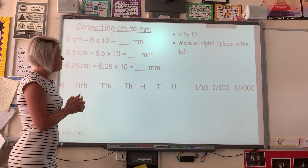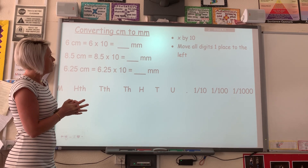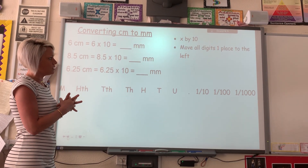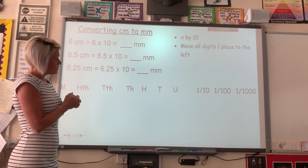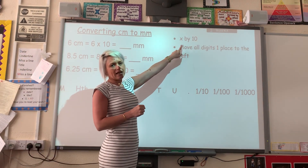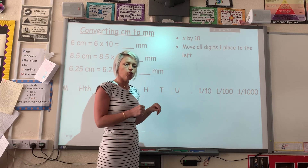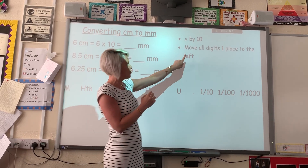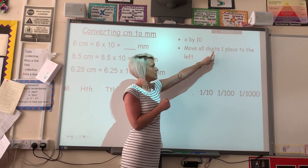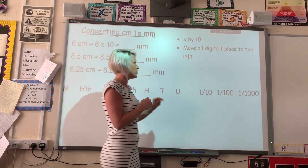Let's have a go at some examples. We're converting centimetres to millimetres. It's ten times bigger, so we're going to multiply by ten, and all the digits are going to move one place to the left. Just to remind you, you can see there's one zero in ten, so we move the digits one place.